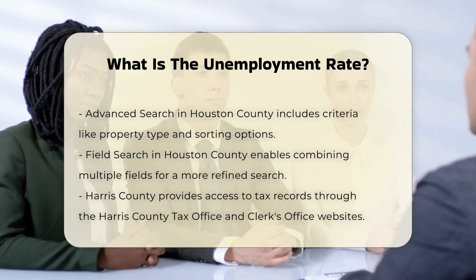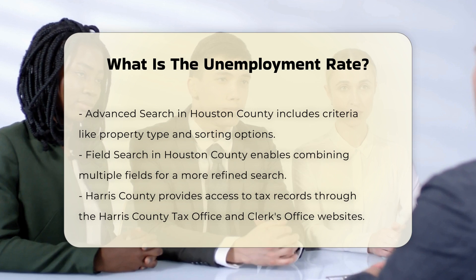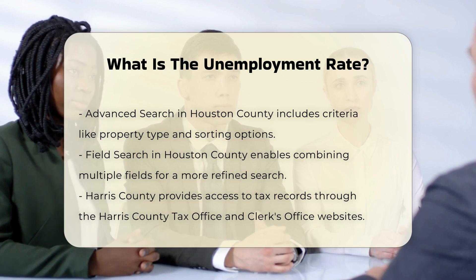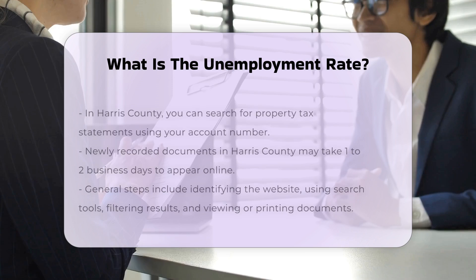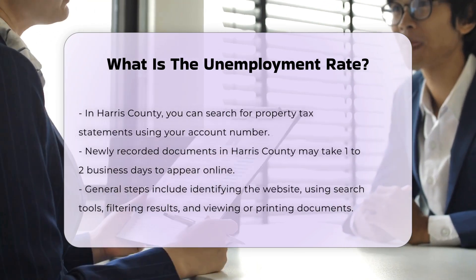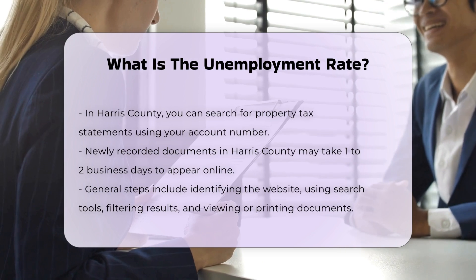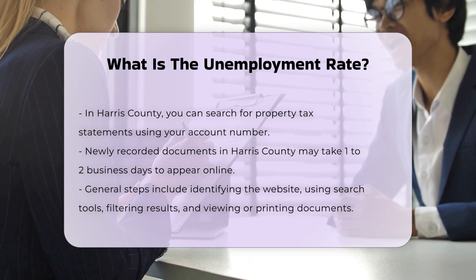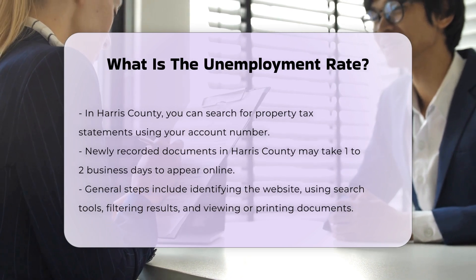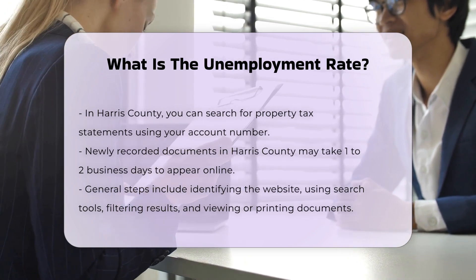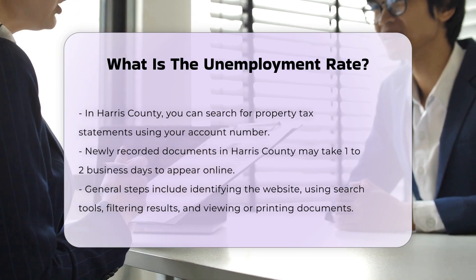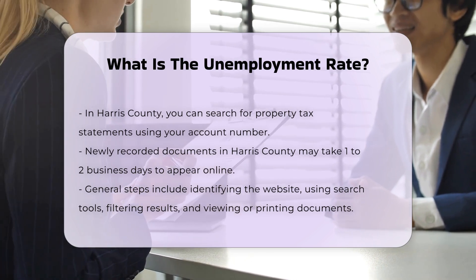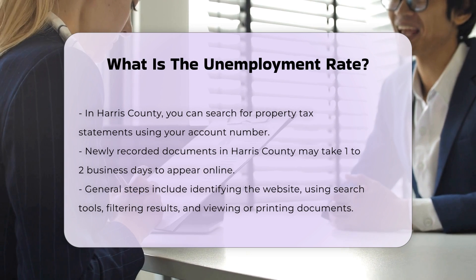Types of unemployment rates. There are several alternative measures of unemployment, known as U1 through U6, each capturing different aspects of labor underutilization. U1 includes those unemployed for 15 weeks or more. U2 includes job losers and those who completed temporary jobs. U3 is the official unemployment rate, which includes all unemployed people as a percentage of the civilian labor force. U4 adds discouraged workers to the U3 rate. U5 includes marginally attached workers in addition to those in U4. U6 is the most comprehensive measure, including part-time workers who want to work full-time but cannot for economic reasons.